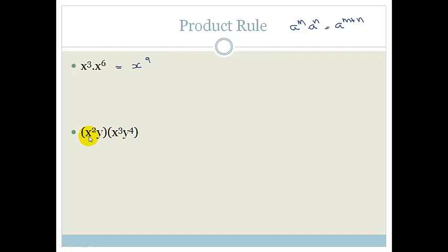Because it's this bracket multiplied with this bracket, it's exactly the same thing as saying x squared times y times x cubed times y to the 4. So that becomes basically x squared times y times x cubed times y to the 4, which I could rearrange if I wanted to. It's x squared times x cubed times y times y to the 4.